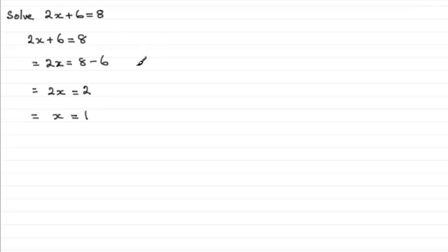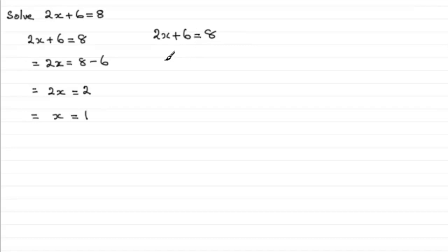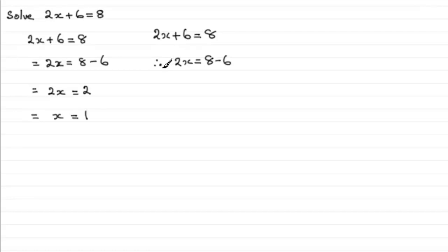Bearing that in mind, how would I write something like this out? We start by writing 2x plus 6 equals 8. Now I'm going to take 6 from both sides, and that would leave me with 2x equals 8 take 6 — or you could write 2x equals 2 immediately. But more importantly, what I'd encourage you to do is write this symbol in — it's like three dots, and it means 'therefore.' It follows on that if I take 6 from both sides, 2x equals 8 take 6. You don't have to write this in, but I would certainly encourage you to do it because it links this statement to the one above.